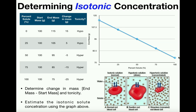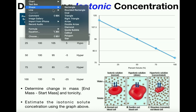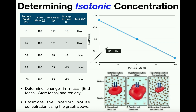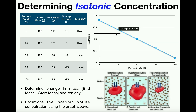The question is how do you get the isotonic concentration? In order to be isotonic, there can be no net diffusion of water in or out — it has to be balanced. In that case, the end mass would have to equal the start mass, so we need an end mass of 100. What we do is something called manual interpolation — we approximate where 100 is on the y-axis, because the end mass must equal the start mass for the solution to be isotonic.